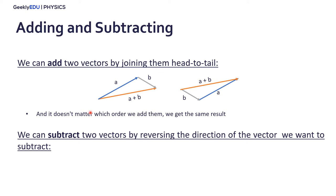Now, we can subtract two vectors by reversing the direction of the vector we want to subtract. For example, if we want a minus b, we can reverse vector b and then add them together.